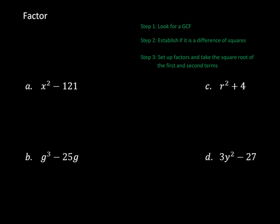Now we're going to take a look at how to factor specific binomials. Let's start with A. Step one is to look for a GCF. I have an x squared and a 121 — they don't have anything in common, so I don't have a GCF.